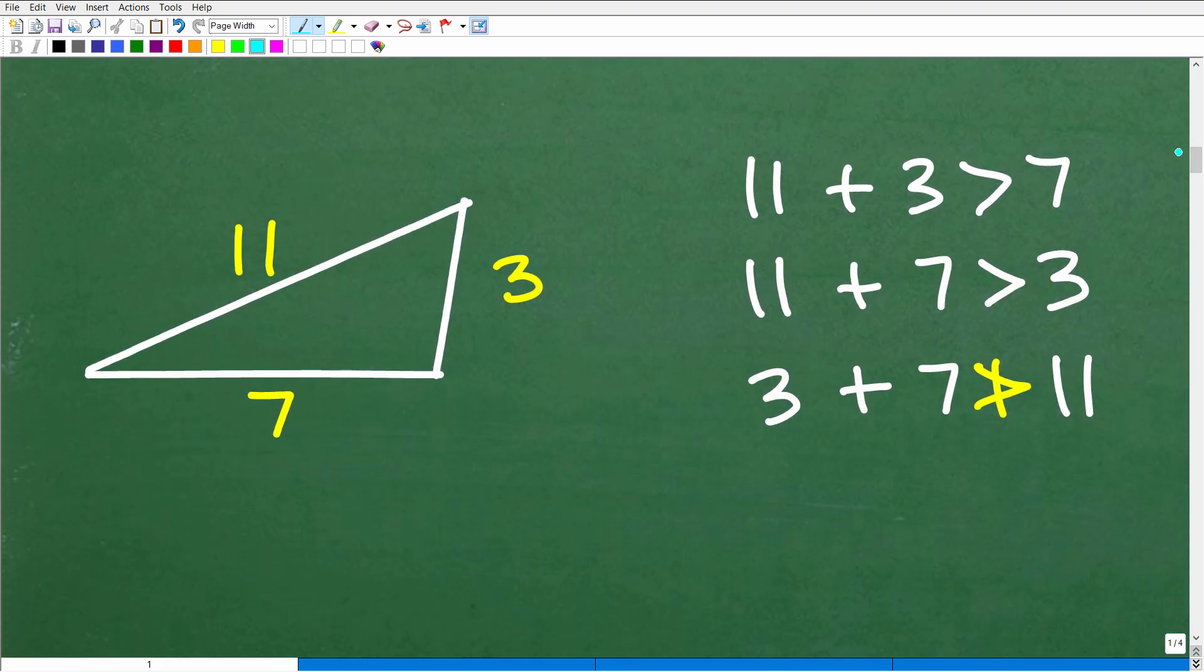So let's take 11 and three. So we'll check that 11 plus three. Is that greater than seven? Yes, it is. No problem there. Looking pretty good, right? So let's check another pair. How about 11 plus seven? Is that greater than that side there? So it is 11 plus seven, of course, is 18. That's greater than three.